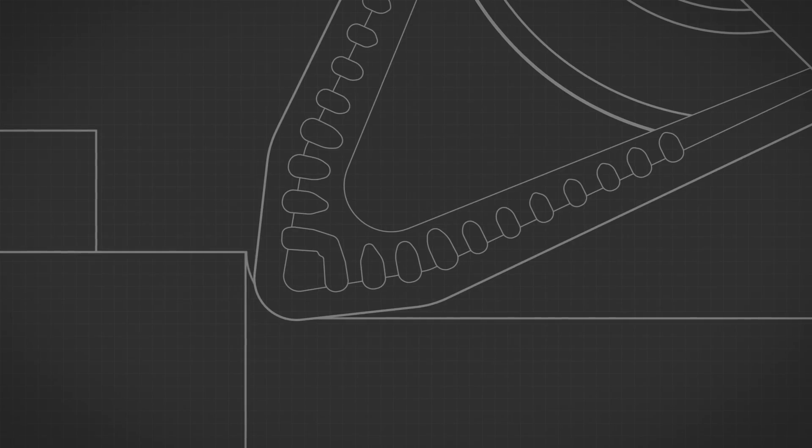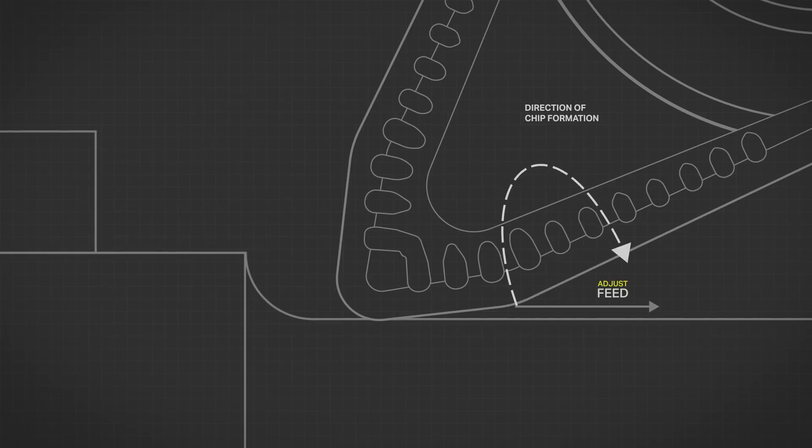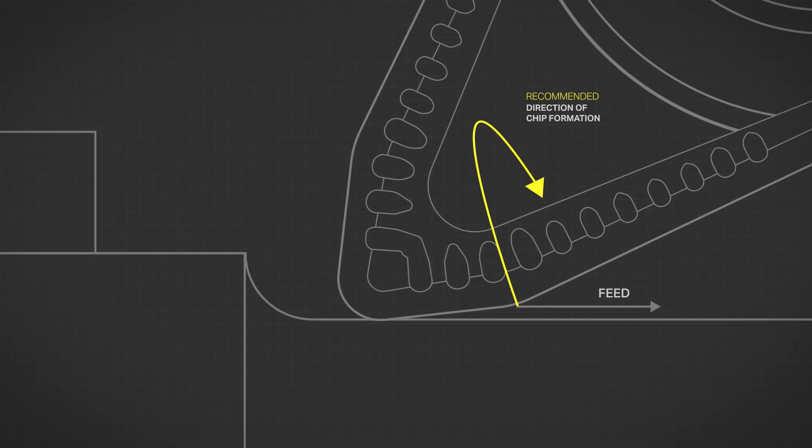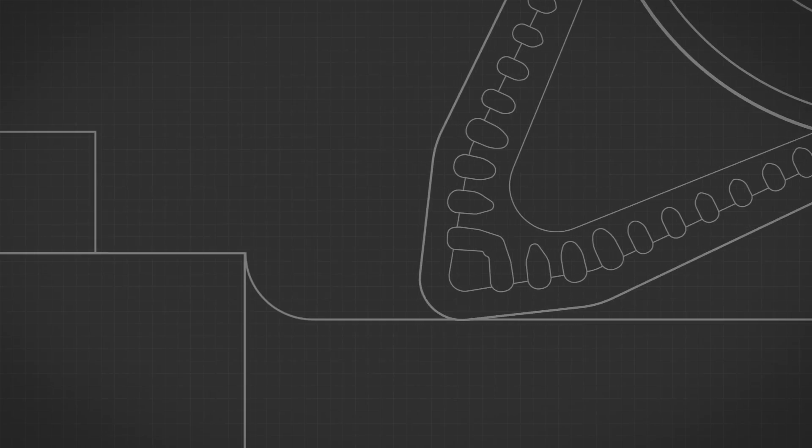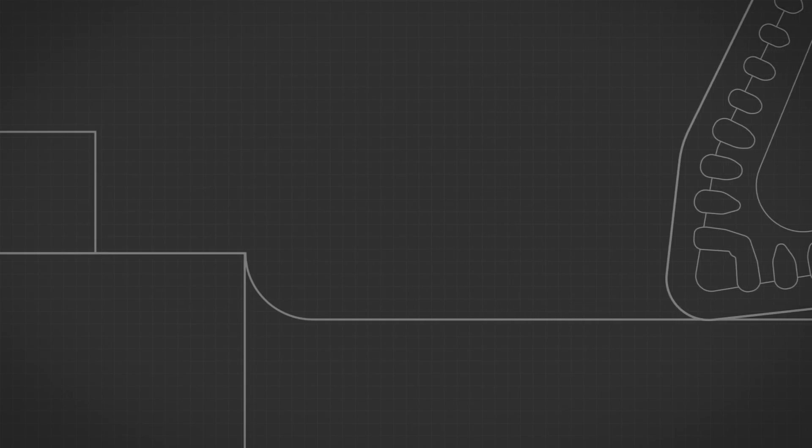With prime turning, the direction of chip evacuation must be considered. The most efficient prime turning operation involves chips breaking toward the unmachined surface, forming a roll that will break consistently. This results in superior surface finishes and operational efficiency while avoiding costly tool damage.